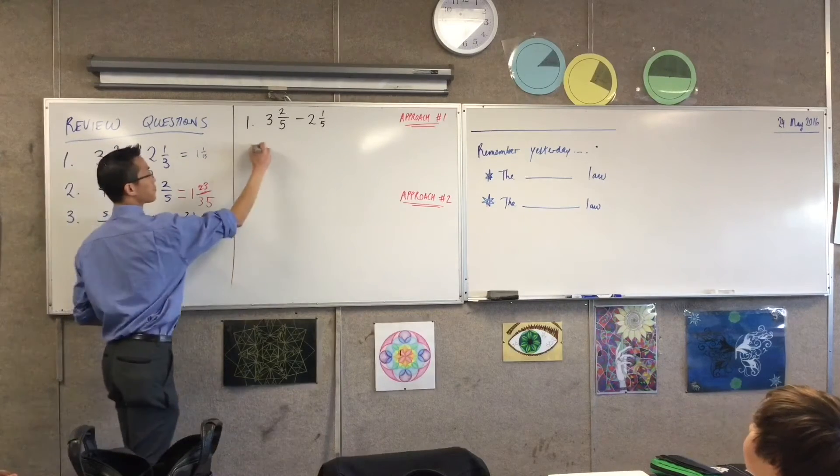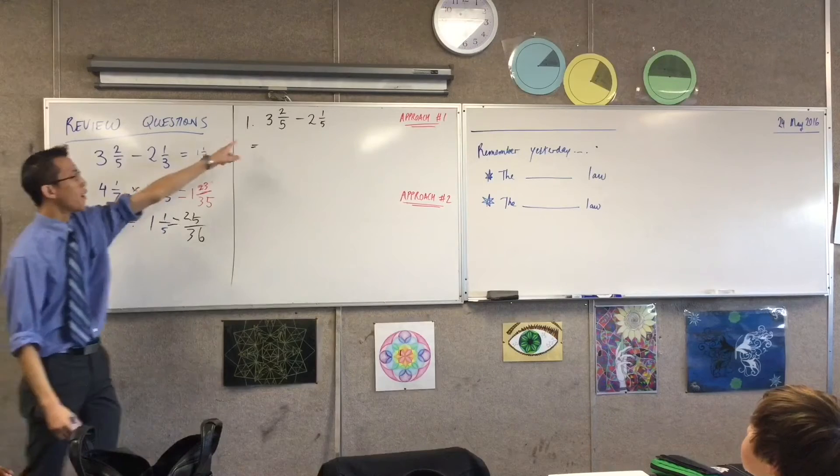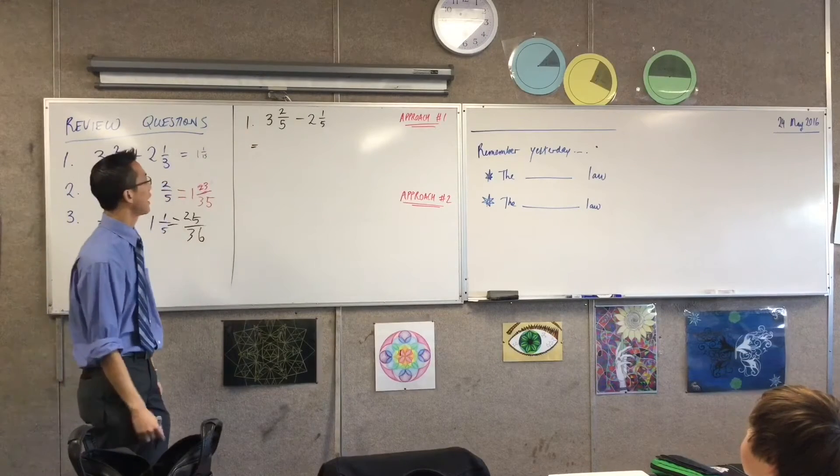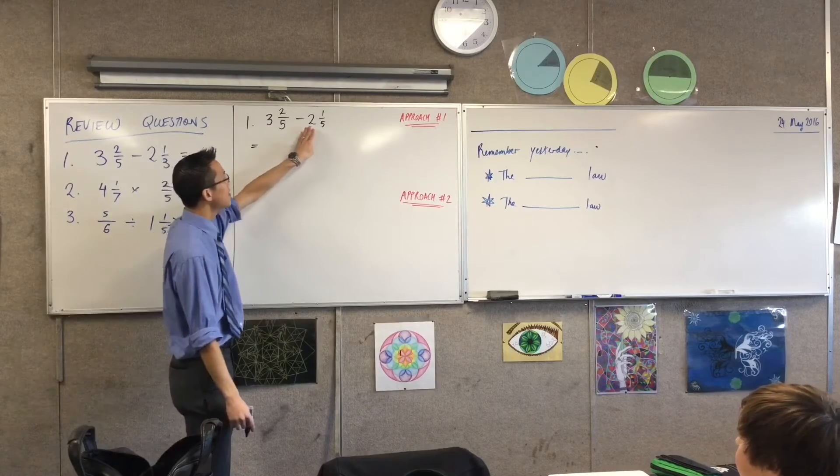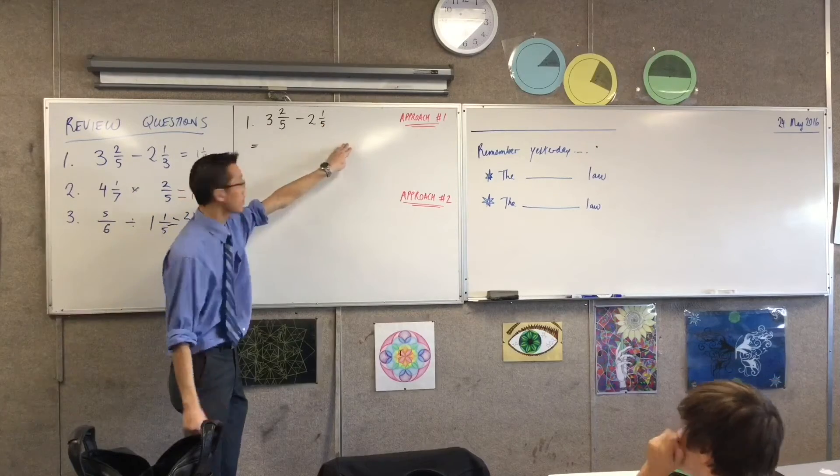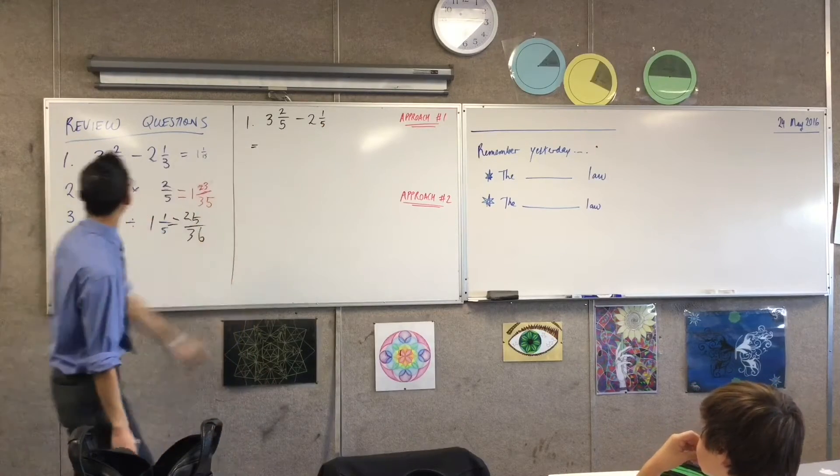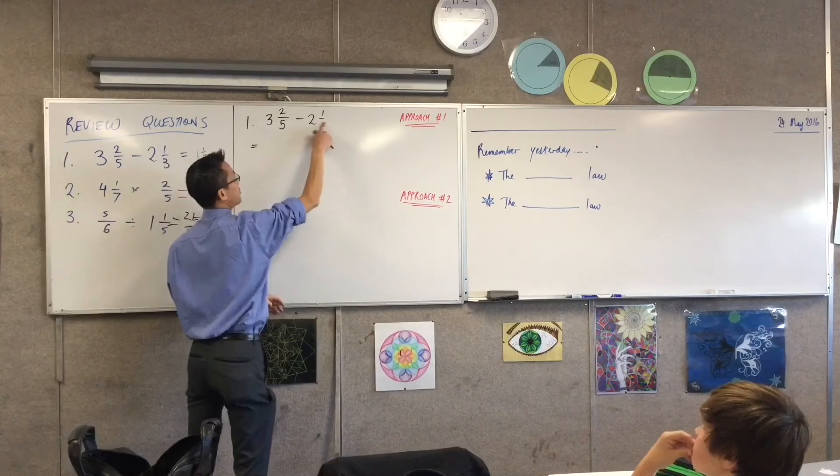Here's the first thing I'm going to do. I want to remember what these things actually mean. So this is three plus two fifths, and this is two plus one fifth, right? Wait, that's a third.